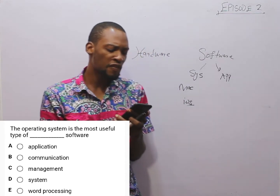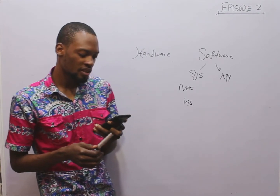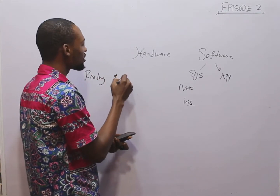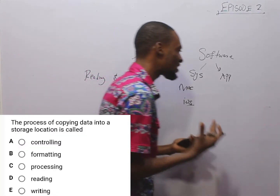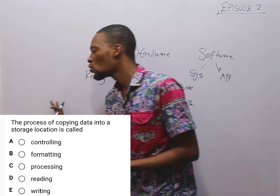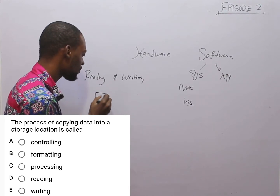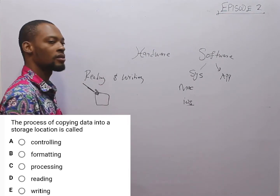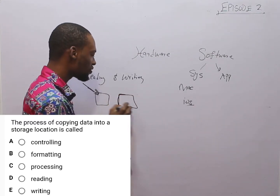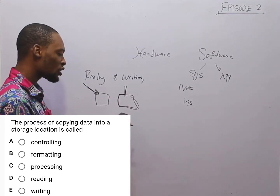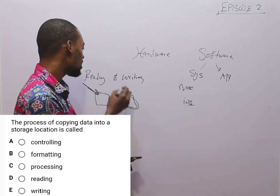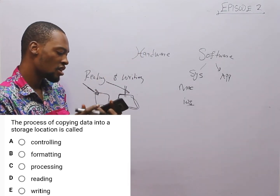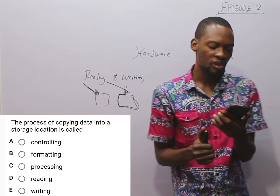The next question says: the process of copying data into a storage location is called writing. Writing is correct. In computer, there is something called reading and writing. If you are copying something into a hard drive — putting data or files into it — you are writing. If you are reading a storage device or hard drive, you are checking what is written inside, scanning through the files, reading the documents. So, writing is to put information, and reading is to get information from the storage device. Therefore, copying data into a storage location is called writing.